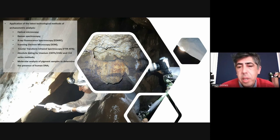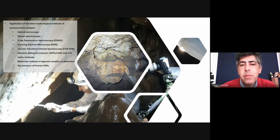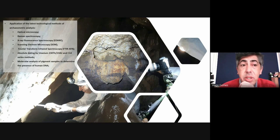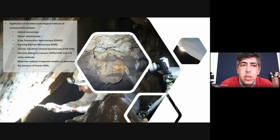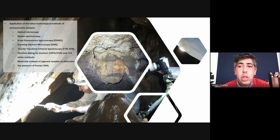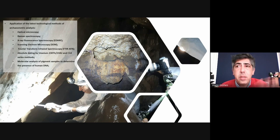The archaeometric methods we use for analysis of pigments include optical microscopy — we use microscopes to examine very tiny samples collected from the rock art, since we cannot damage an entire figure. We use microscopy to observe the particularities of the sample and to prepare it for other methods. Raman spectroscopy was the first apparatus we used, in collaboration with the University of Ferrara, to identify the main mineralogical components of the pigments collected.